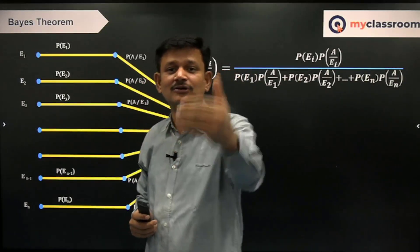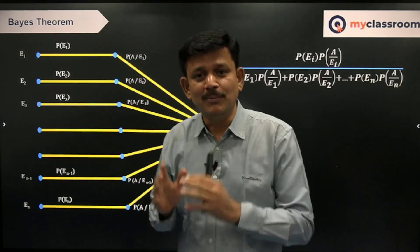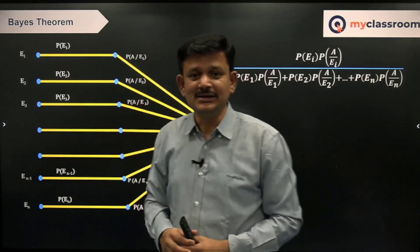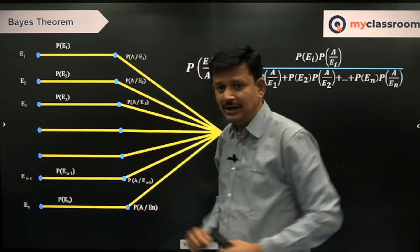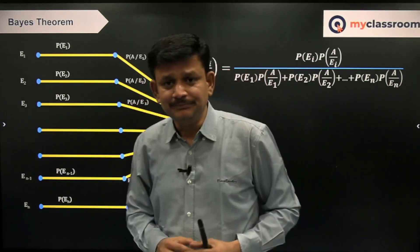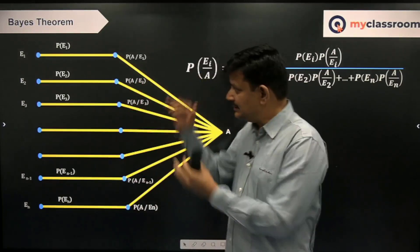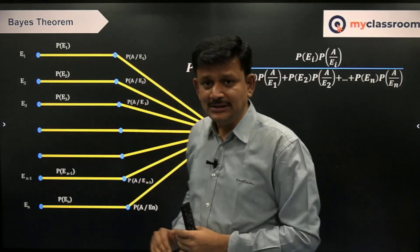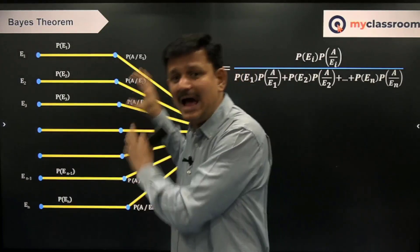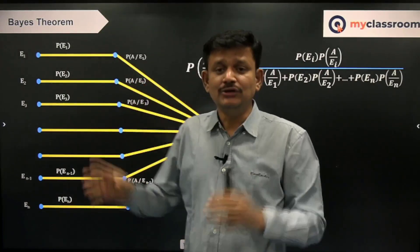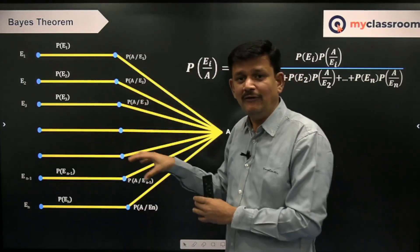Whenever a final outcome is known to you and you are finding the probability of the intermediates, then it is a question on Bayes' Theorem. Bayes' Theorem needs some total probability. So whenever you know that event A has happened, you will identify what all cases are there through which it would have happened.